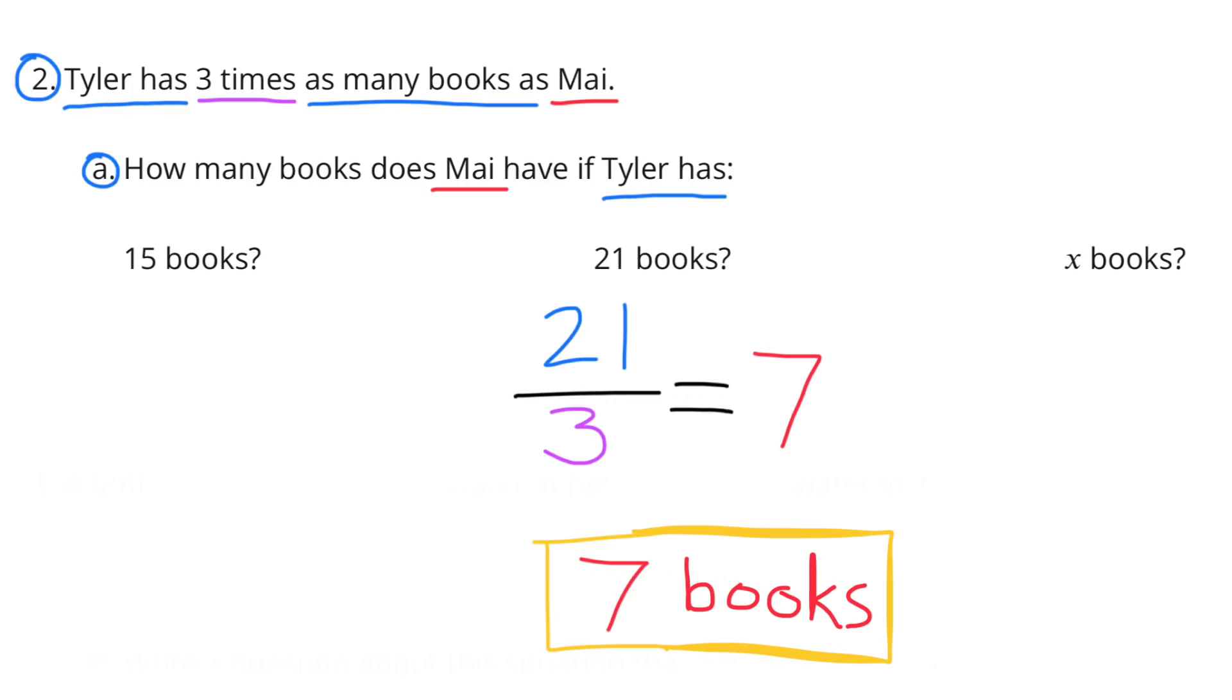How about if he had 21 books? Well, his 21 books divided by 3 equals 7. So when Tyler had 21 books, Mai would have 7 books.